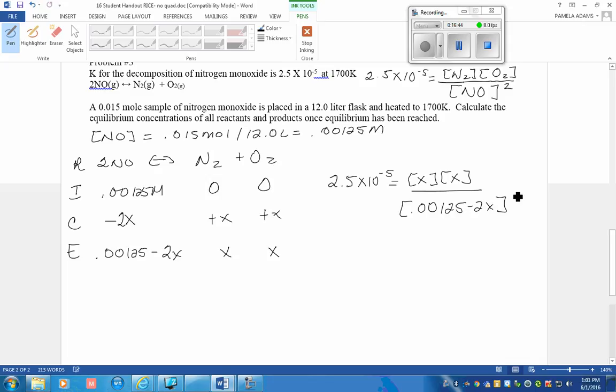And this quantity will be squared. This is the part for expediency sake that we are allowed to disregard. I'm going to square this and then multiply it by that. And when I do that, I get 3.91 times 10 to the negative 11 equals X squared. X equals 6.25 times 10 to the negative 6.